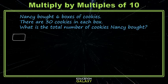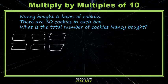So we have these 1, 2, 3, 4, 5, 6 boxes of cookies, and there are 30 cookies in each box. Maybe you could add these 30s up six times, and that would give you the total.